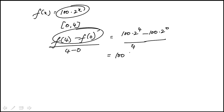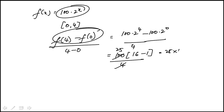If I factor out 100, this is 16 minus 1 over 4. That's 25 times 15, which is 375. Answer choice B.